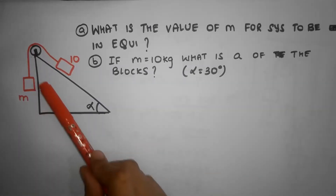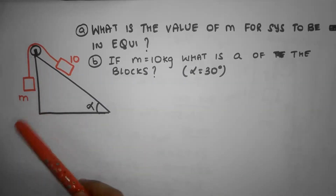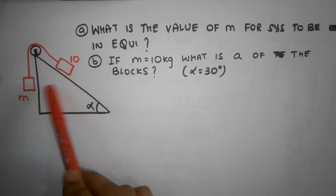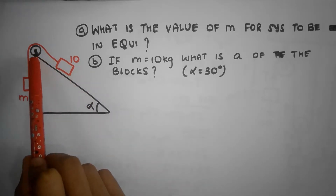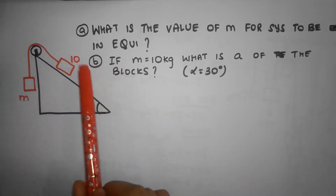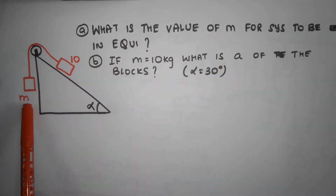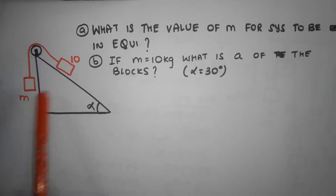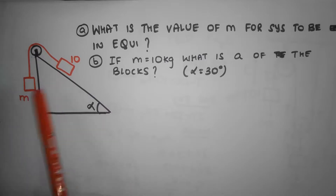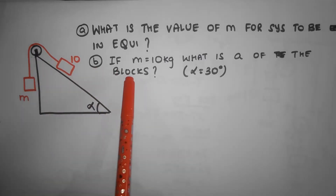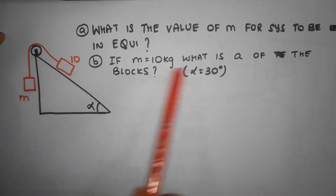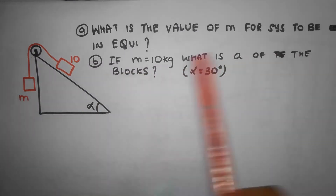Here's another example of constraint motion. We have an incline and two blocks connected by a string over a massless small pulley. There are two questions: first, what is the value of mass m such that the system remains in equilibrium with no acceleration, and second, if m equals 10 kilograms, what is the acceleration of the blocks?